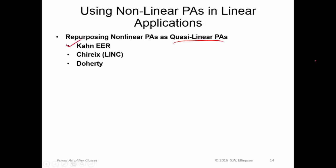Kahn, E-E-R, Chireix, or LINC, and Doherty. Now, Doherty is increasingly common. There's a recent surge of interest in this. These two are old schemes which keep re-emerging. People keep trying them out and improving them, and then they kind of fade away again. So if you're interested in power amplifier design, these are techniques that are all of interest. And I would say right now, Doherty is probably the method which is kind of garnering the most interest.